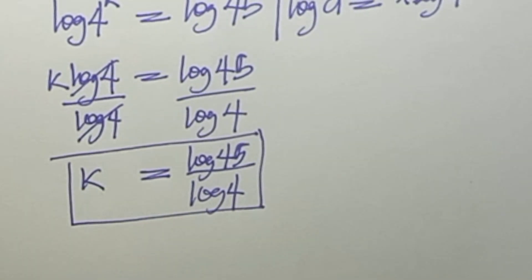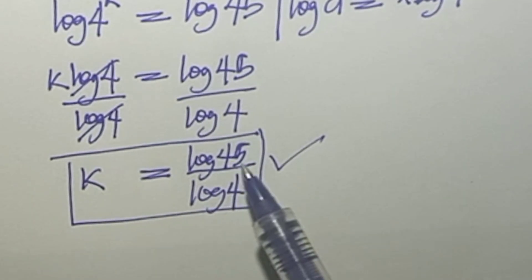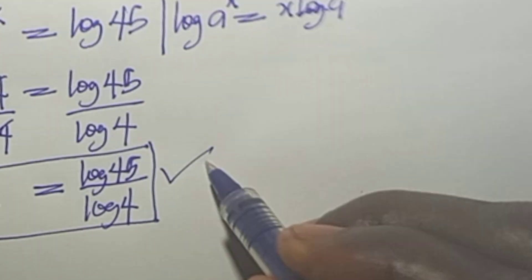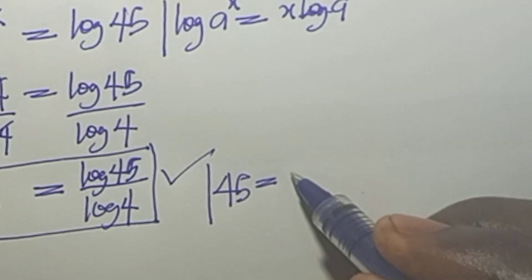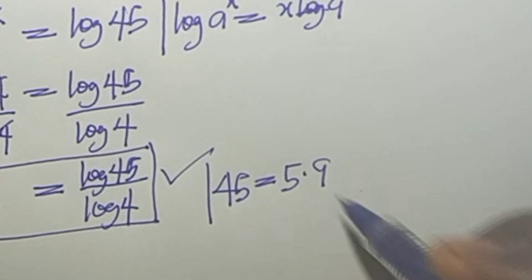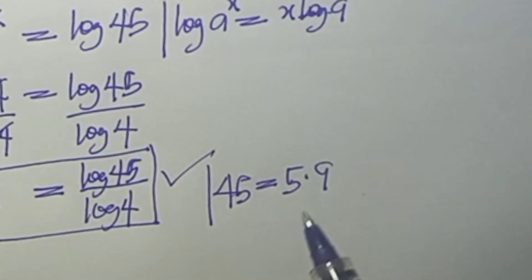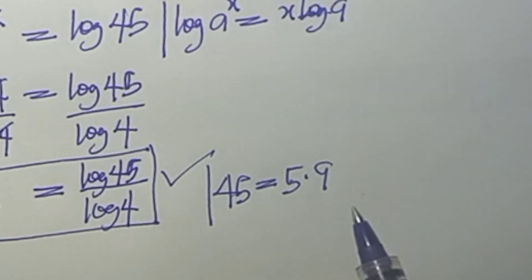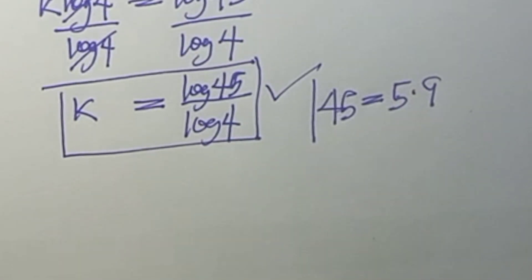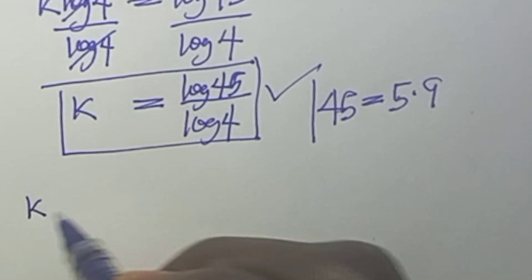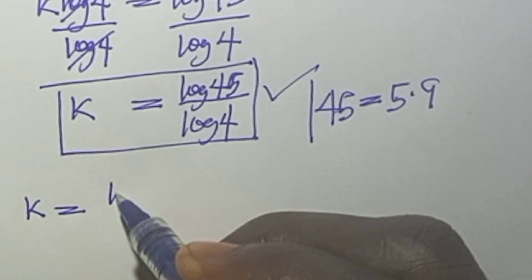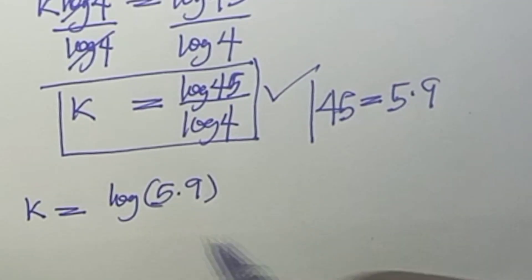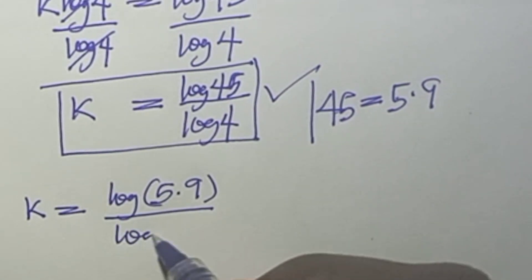However, 45 can be split into its factors. If we write 45 as 5 times 9, we can replace 45 with 5 times 9. So the next line becomes k equals log of 5 times 9, all over log 4.